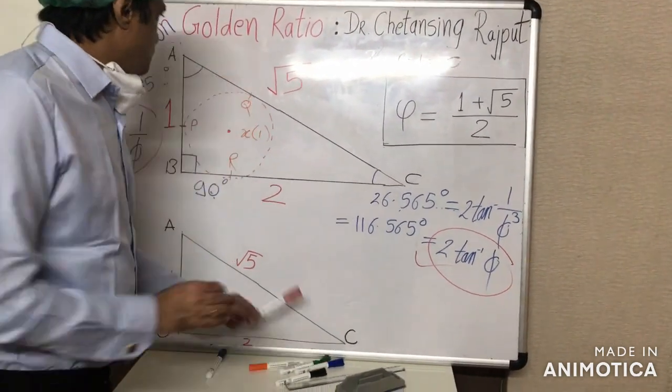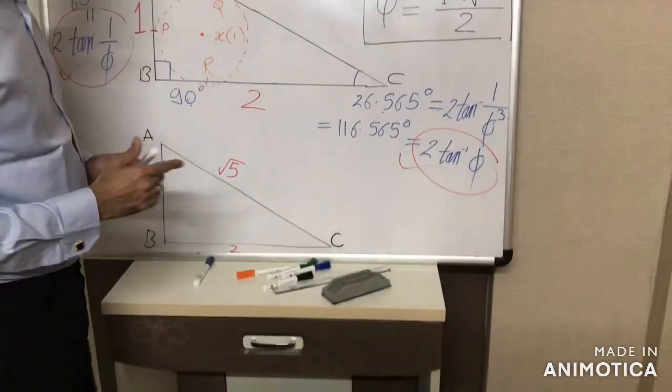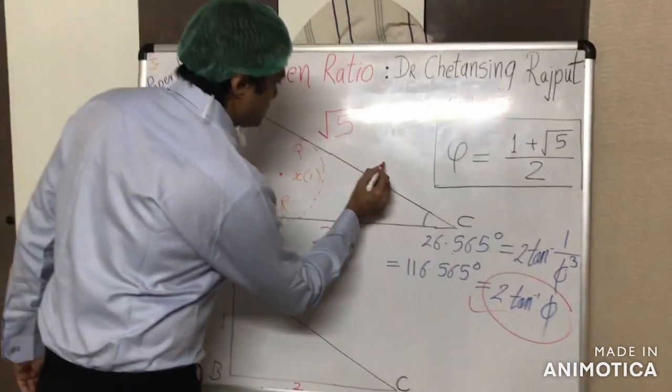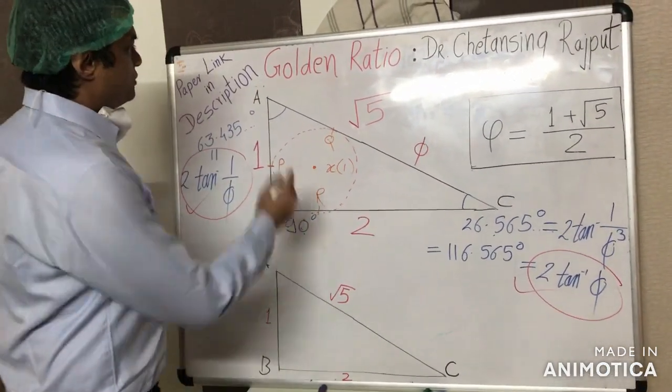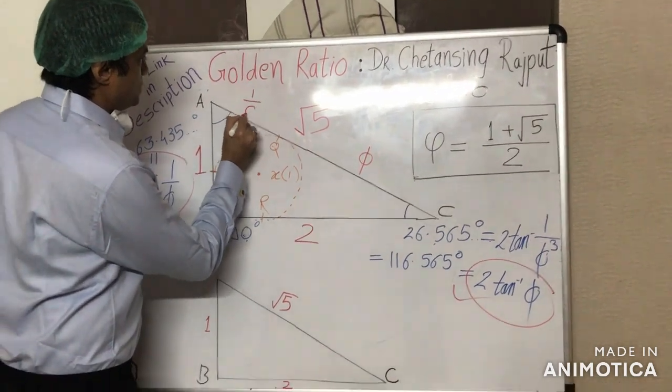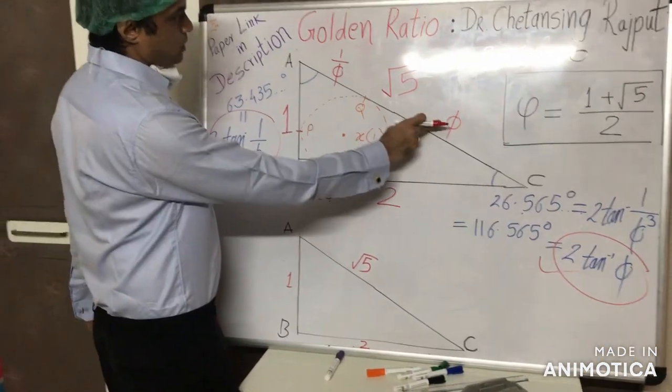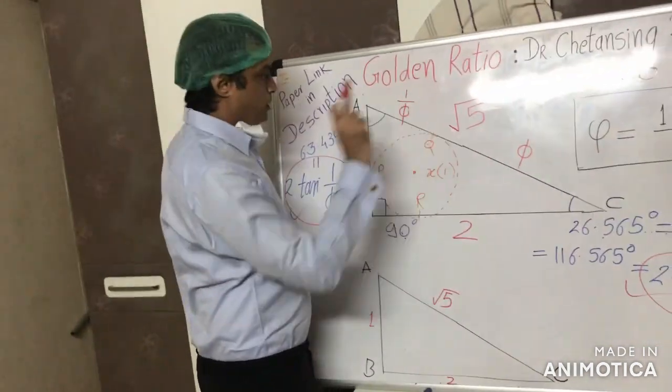Now these three points P, Q, R divide the side lengths of the triangle in a very peculiar manner. Like this point Q divides the hypotenuse AC in a very precise manner. This distance QC here is precisely equal to golden ratio, and this distance AQ here is precisely equal to inverse of golden ratio. Golden ratio and inverse of golden ratio, they add up to square root of 5.